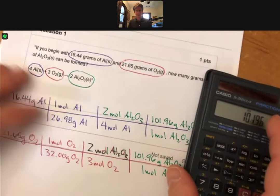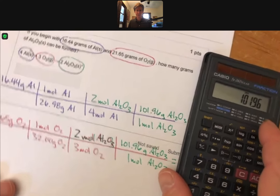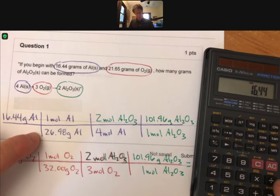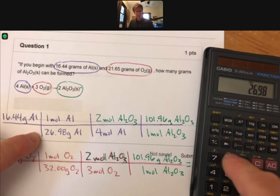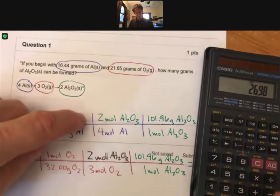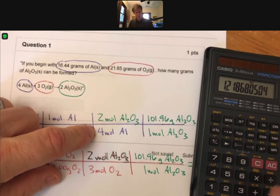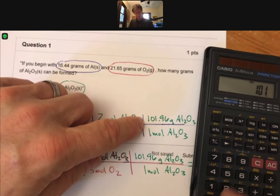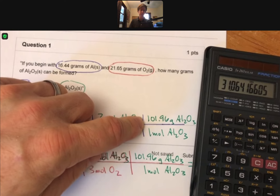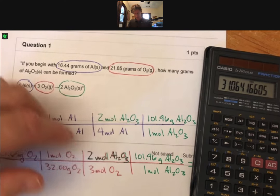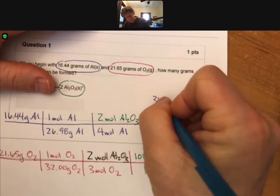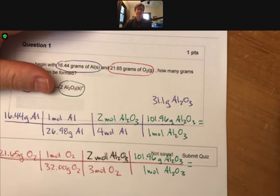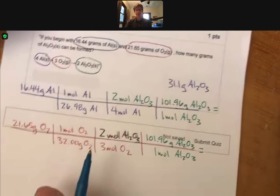So we've got 16.44 divided by 26.98 times 2 divided by 4 times 101.96 and I get 31.1 grams of aluminum oxide, if aluminum is the limiting reactant.